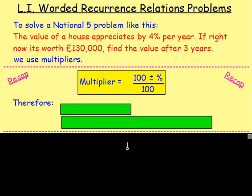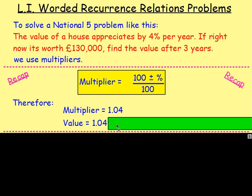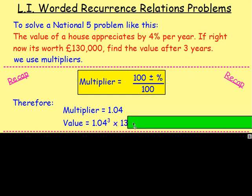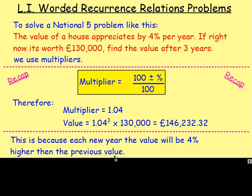Then, after that, to work out the value, you used the multiplier to the power of the number of years times the original. So for this one, the multiplier would be 1.04 because it's 100 add 4, which is 104, divide by 100 is 1.04. Then to work out the value, you took the multiplier, did it to the power of 3 because it's in three years' time, and you multiplied that by the original value of the house and got your answer.